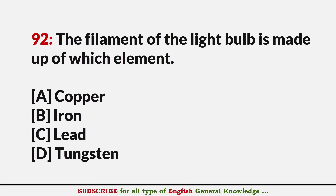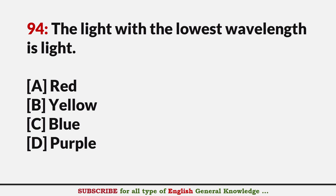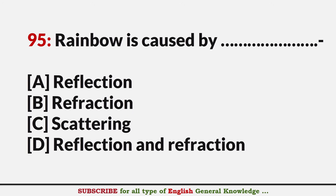The filament of a light bulb is made of which element? Answer D: Tungsten. An electric motor works according to which principle? Answer A: Faraday's law. Which color of light has the lowest wavelength? Answer D: Violet. Rainbow is caused by? Answer D: Reflection and refraction.